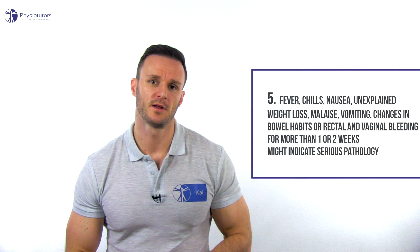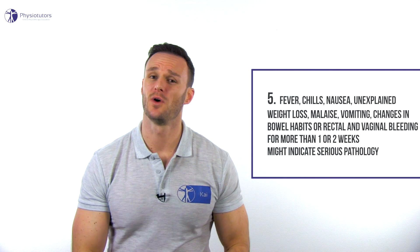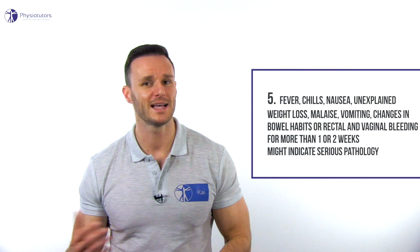Fifth: questions about general health may also reveal critical information. Signs and symptoms like fever, chills, nausea, unexplained weight loss, malaise, vomiting, changes in bowel habits or rectal and vaginal bleeding for more than one or two weeks might be an indicator of a more serious pathology. Make sure that you are aware of conditions that the patient is currently treated for or has been treated for in the past, as many can have a history of recurrence, and ask for family history as well.